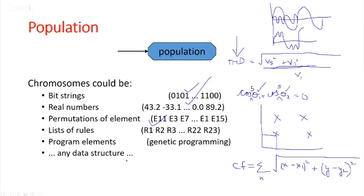If you choose a very big population, the time consumption will be high. If you choose a small population, sometimes the whole search space will not be utilized and you'll get only a local peak. So you have to optimally choose the population size. There is no exact formula — often it's trial and error. You can take a medium population, solve it, and if it terminates well, try reducing by 10, check again, reduce further to make the problem run faster.